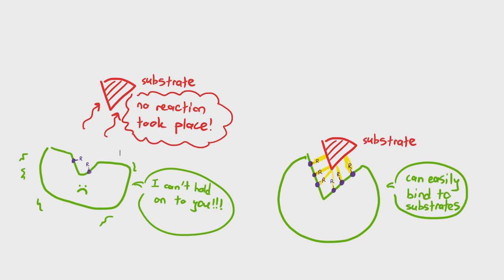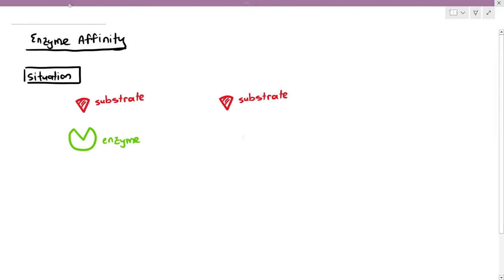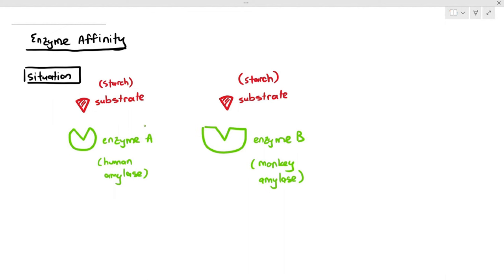Affinity is like attraction between the enzymes and substrates. In my diagram here, I'm drawing out enzyme A and enzyme B. They both have active sites which are complementary to the same type of substrate. Let's say the substrate is starch, enzyme A is amylase derived from humans, and enzyme B is also amylase but obtained from monkeys. Humans and monkeys are different species but can produce the same type of enzyme, with the exception that the 3D structure may be slightly different.